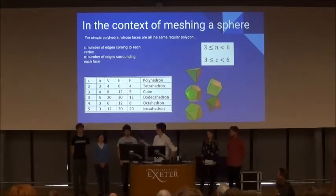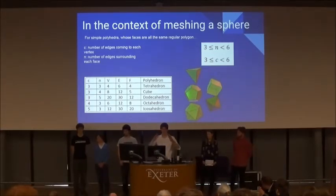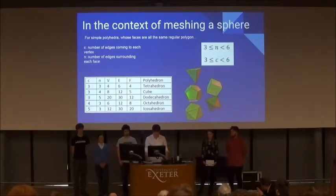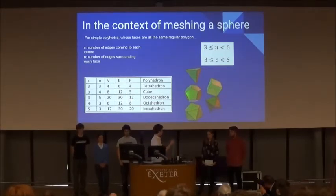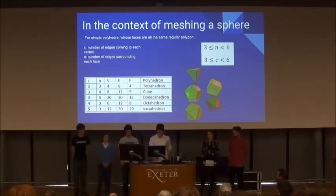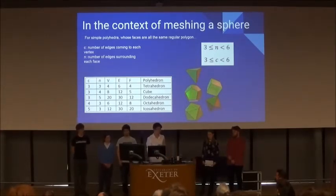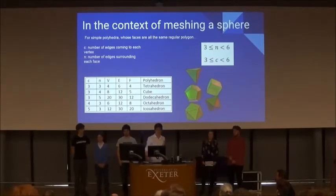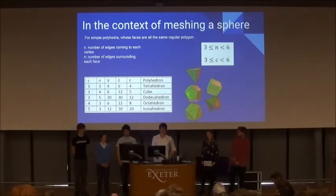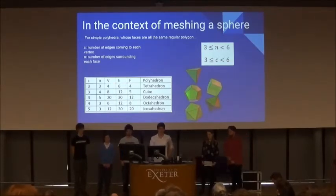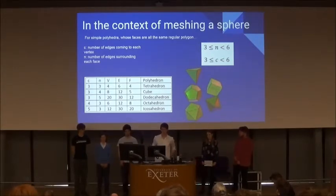So, if we call C the number of edges coming to each vertex — for example, on a cube, three faces come to each vertex — and if we call N the number of edges surrounding each face, so again through a cube that would be four, we can express V and F in terms of C and N, and we can create an inequality which says that for a sphere whose faces are all the same polygon, the number of sides of the polygon can only be three, four, or five — triangles, squares, or pentagons. With this restriction, we can further prove that there are only five different combinations of C and N, hence five platonic solids. So the formula is useful for proving that the platonic solids aren't that useful in meshing a sphere, but as mentioned, you can make them better with higher resolution.